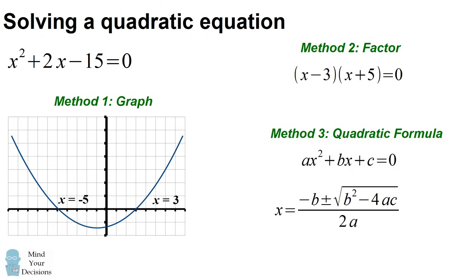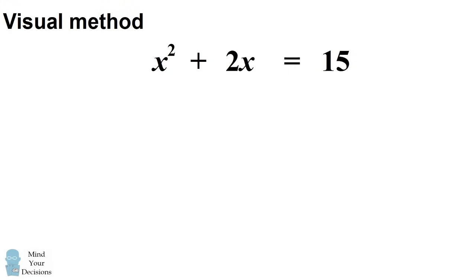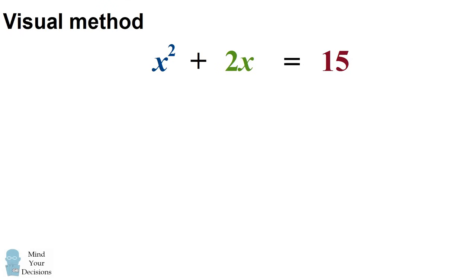Why exactly does it work? So let's try to understand this geometrically. We'll solve this equation by first adding 15 to both sides so that we have x squared plus 2x equals 15. I'll now color code each term — each term is going to represent the area of a shape. For x squared, I'll represent it by a square which has a side length of x, so the area of the square is equal to x squared.